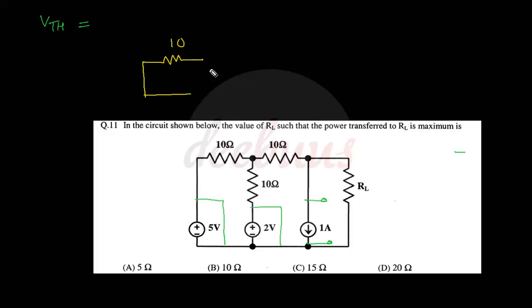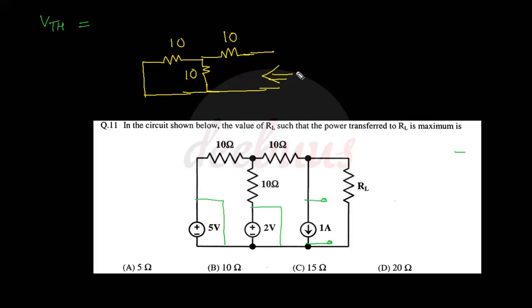Thevenin resistance now turns out as follows: there is a 10Ω, the 5V source is short-circuited, another 10Ω, the 2V source is short-circuited, and one more 10Ω; the 1A branch is open-circuited. Thevenin resistance between the two points is 10 parallel 10, which is 5, plus 10, giving 15Ω. So the resistance for maximum power transfer is 15Ω.